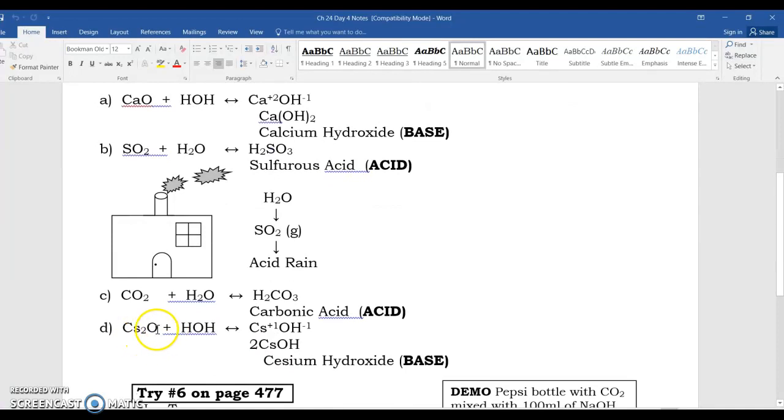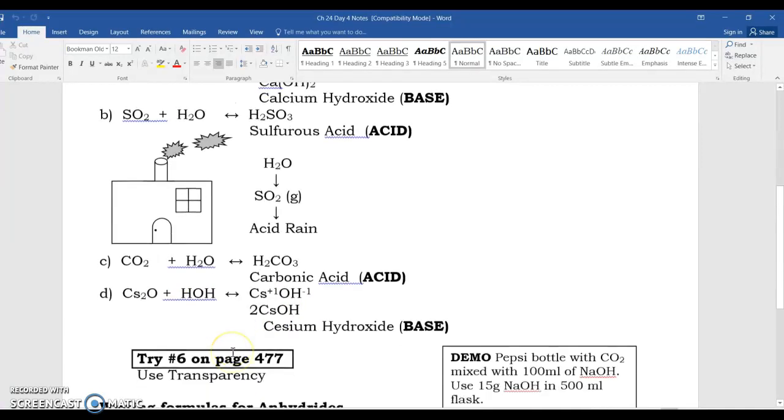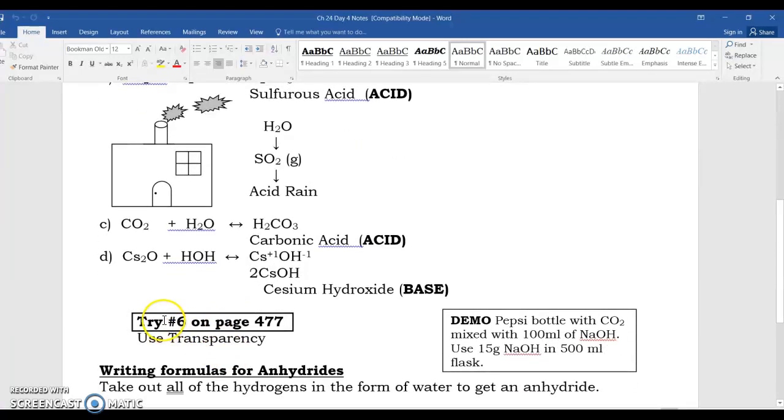Over here, cesium oxide, Cs2O, and it's a 2 because the charges match up. Over here I'm going to show you how to balance these. The metal oxides in water make bases, and I'm going to show you where they come from so you can determine how to do your work. This number 6 is the first one on your homework, number 6 on page 477.